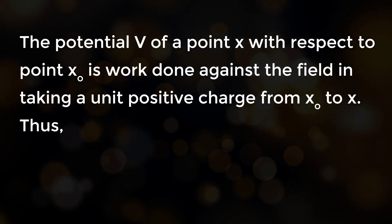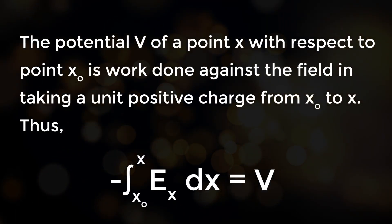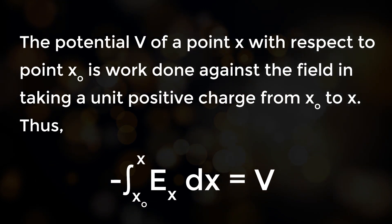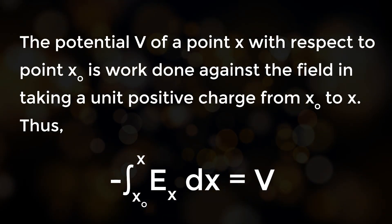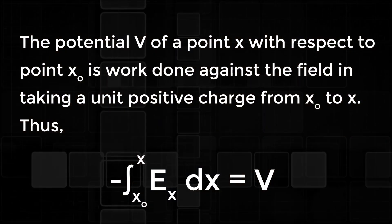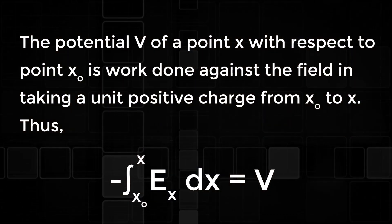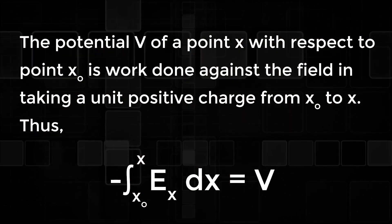The potential V of a point x with respect to point x0 is the work done against the field in taking a unit positive charge from x0 to x. Thus, minus integral from x0 to x of Ex dx equals V.